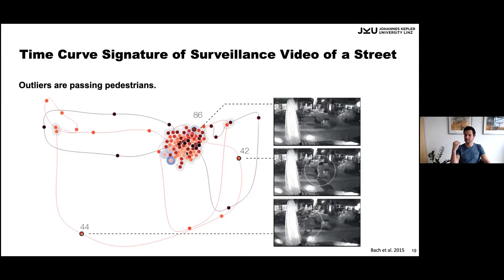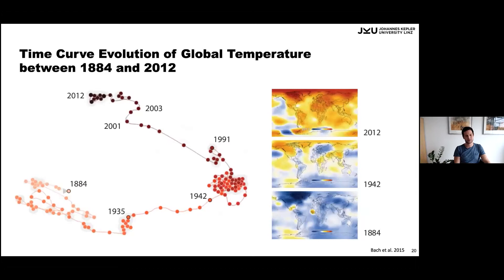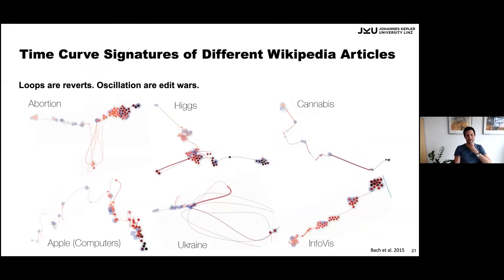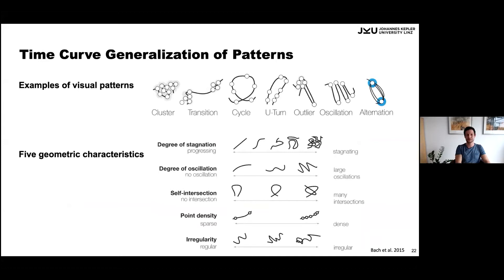Another dataset: global temperature evolution between 1884 and 2012 — when points deviate a lot, it means things have changed and data points are more dissimilar. Applied to Wikipedia articles, you can see edit wars — for abortion, people editing back and forth — nicely preserved in the embedding. An important aspect of publishing a technique is generalizing the patterns: what does it mean if you see a cluster, cycles, U-turns? This is a very strong aspect of the paper.